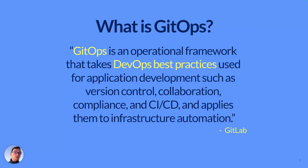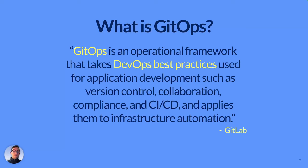On one hand, the advantages of GitOps include security and stability, because you can easily roll back to a working state with just a PR. Everything is stored in a versioned repository, for example a Git repository. When you have a breaking change that breaks your production, you can easily create a new PR and roll back to the state where you know it was working.